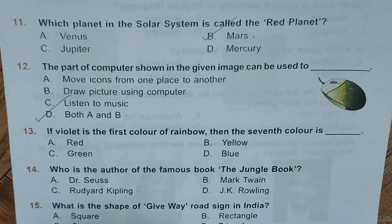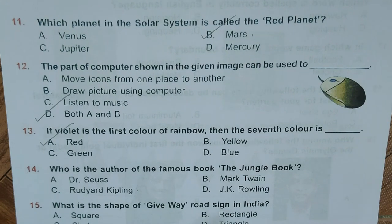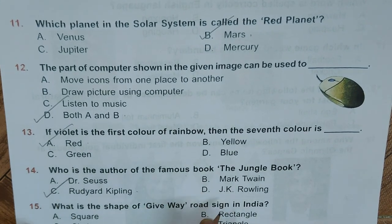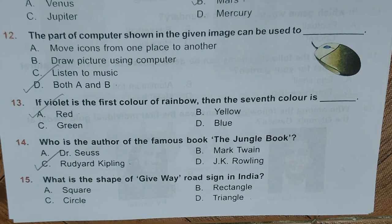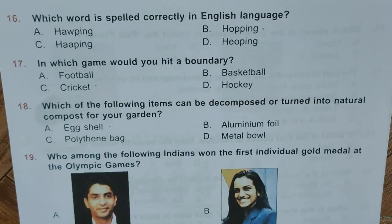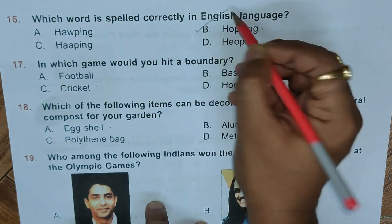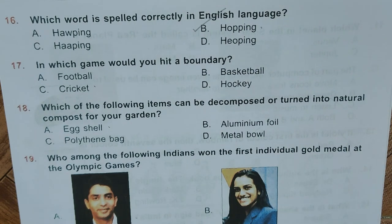Question 13: If violet is the first color of the rainbow, then the seventh color is — A. Red, B. Yellow, C. Green, D. Blue. Correct answer is A, Red. Question 14: Who is the author of the famous book 'The Jungle Book'? A. Dr. Seuss, B. Mark Twain, C. Rudyard Kipling, D. J.K. Rowling. Correct answer is C, Rudyard Kipling. Question 15: What is the shape of a give-way road sign in India? A. Square, B. Rectangle, C. Circle, D. Triangle. Correct answer is D, Triangle.